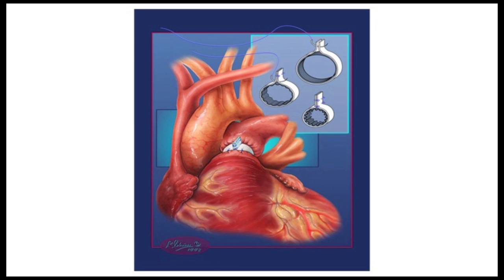As I stated before, sometimes there's too much blood flow going to the lungs. Under those circumstances, one might have to perform a pulmonary artery band. You can notice here in this beautifully colored drawing that there is a band placed around the pulmonary artery, and this limits the flow to the lungs. This is a palliative operation and is used only for a short period of time so that the baby can grow and have this definitive operation.